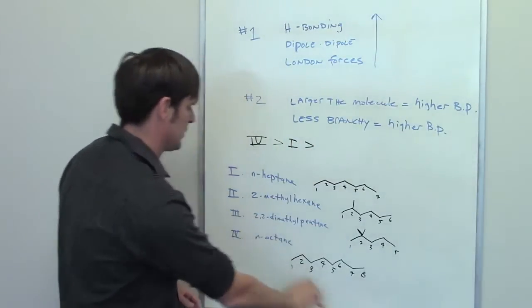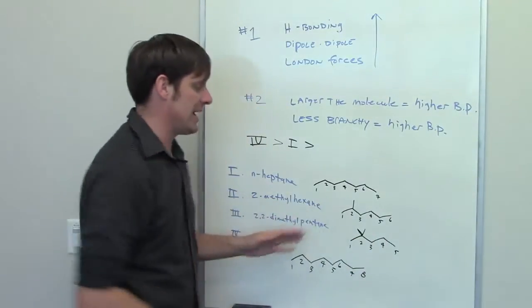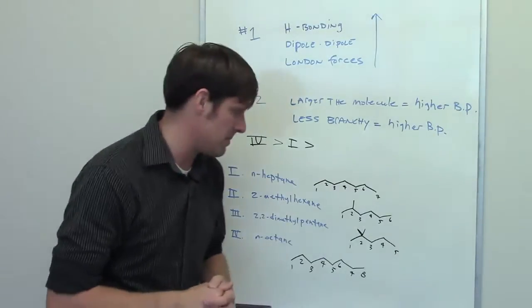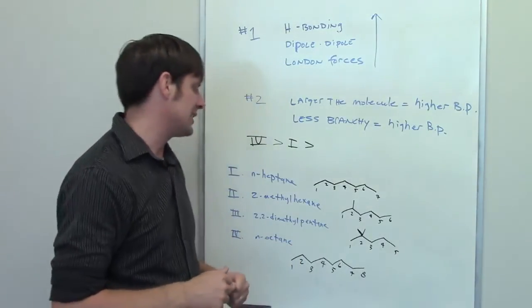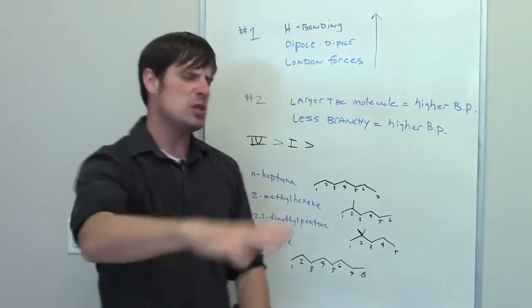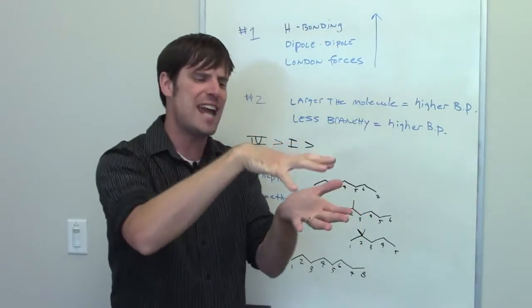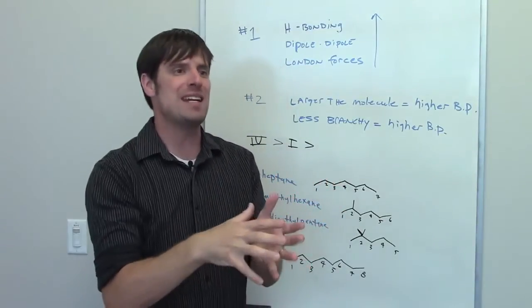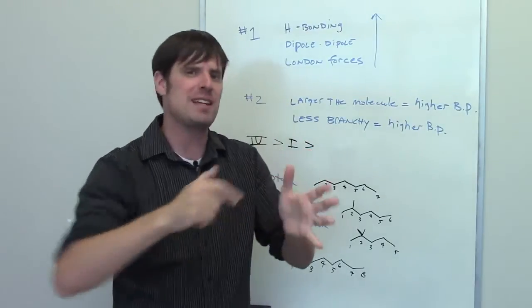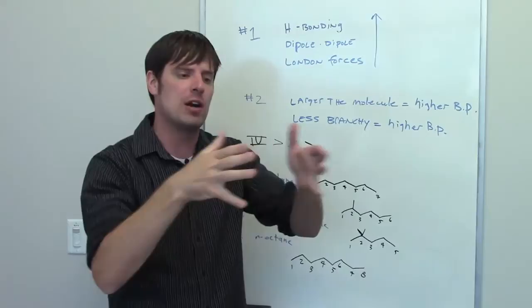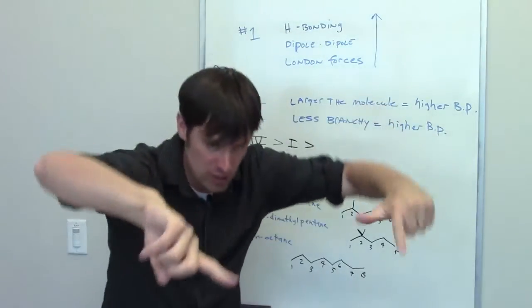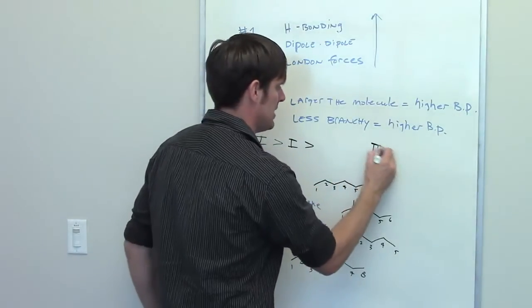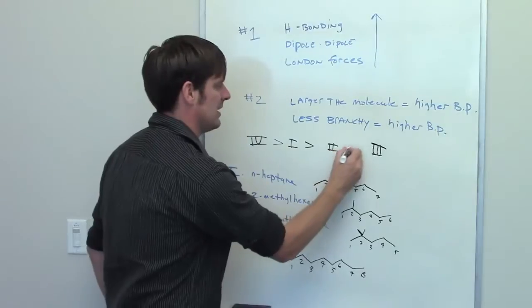As we look at the remaining two molecules — 2,2-dimethylpentane and 2-methylhexane — both of these are roughly the same size and have the exact same molecular formula, but one of them is much more branchy: the 2,2-dimethylpentane. Because it's branchy, it can't stack as tightly on top of other molecules of itself, which means it can't stick as much, which means it doesn't take as much heat to get it to separate and convert from a liquid to a gas. So 2,2-dimethylpentane will have the lowest boiling point, and 2-methylhexane will be right in the middle.